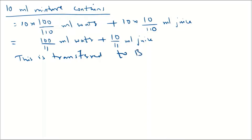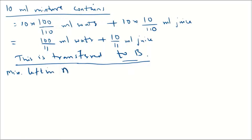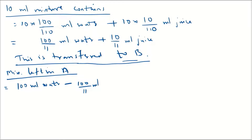This quantity is transferred to B, which we know contains only juice. Now, what is left in A? From the 100 ml of water we subtract 100/11, and from the 10 ml of juice we subtract 10/11. So the mixture remaining in A has 100 minus 100/11 of water and 10 minus 10/11 of juice.